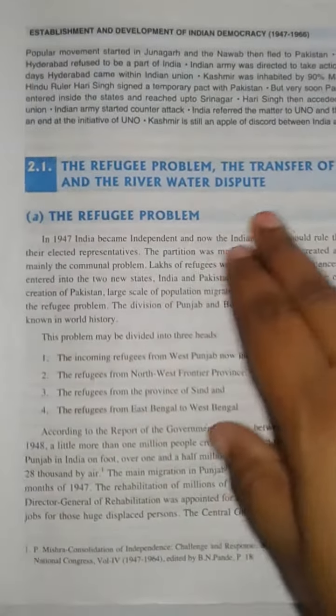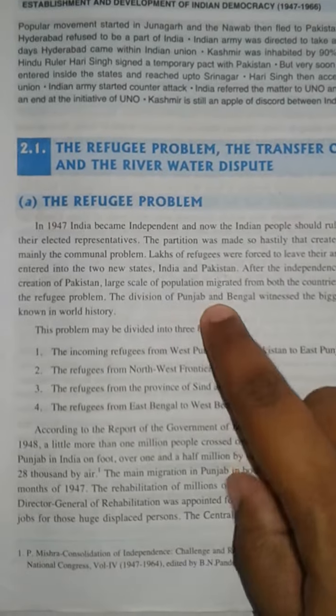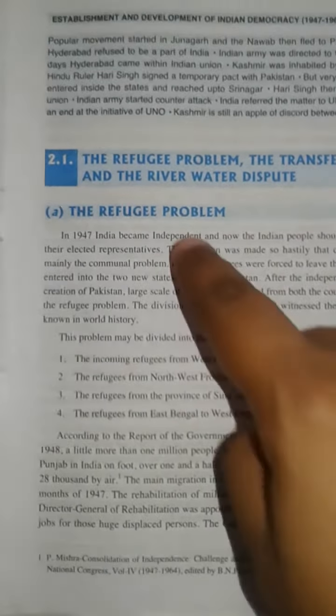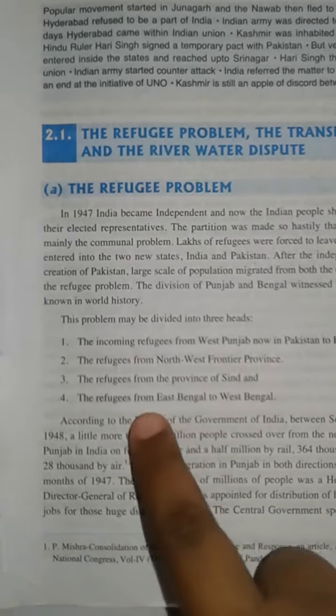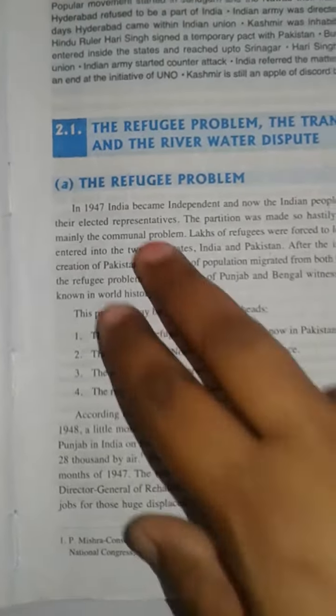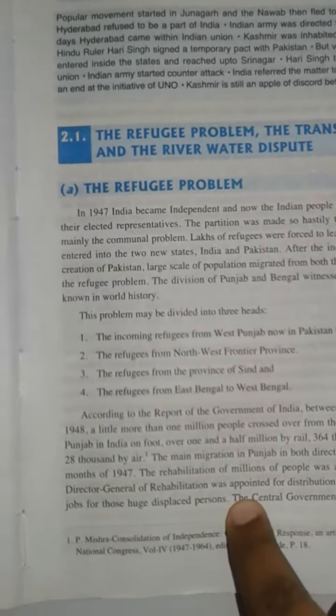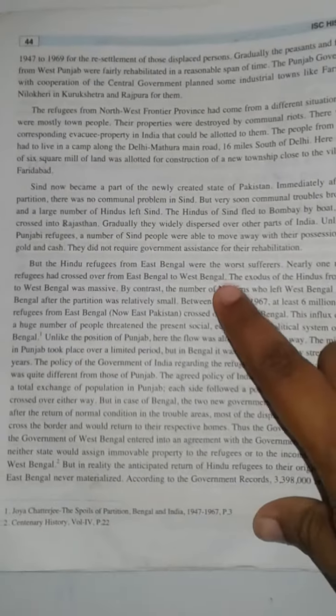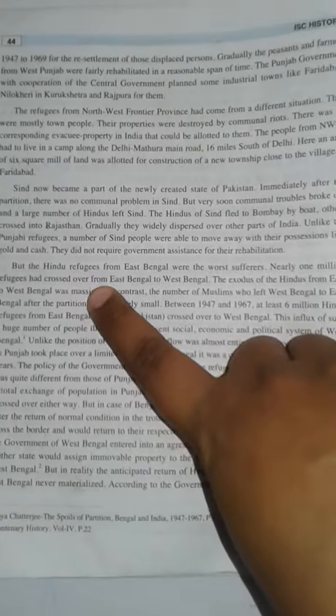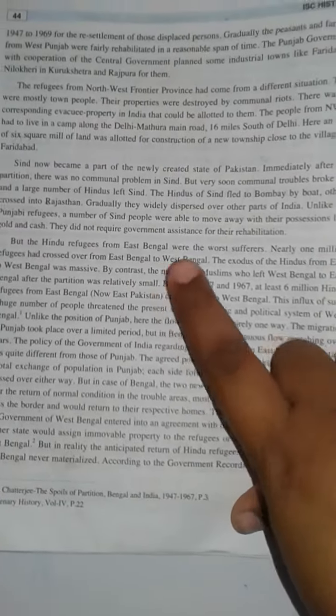I have already given you in the study material the refugee problem related questions — what were the problems related to the migration of refugees from one place to another, and from which part the refugees migrated. For example, refugees from the Northwest Frontier Province, refugees from the province of Sindh, refugees from East Bengal. On these topics I have given you one-part questions. Then, what was the report given by the government of India related to refugee migration? I have also given you what were the sufferings of the refugees who migrated from East Bengal and the transfer of assets. So these topics have been discussed.